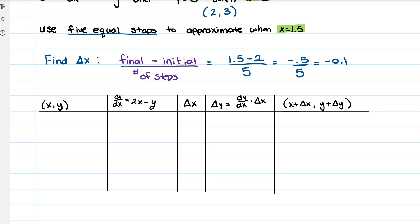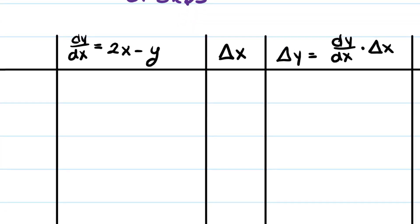So what we're going to do here is wherever we have a delta x, we're going to put negative 0.1. So our first point is going to be (2, 3), and then to find dy/dx, we're going to plug our x and y values in. So if you plug it in, you get 2 times 2 minus 3, which gives us 1.